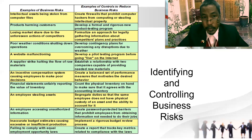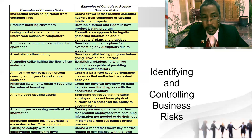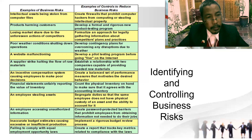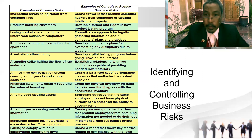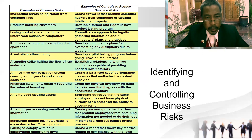Number three — unforeseen actions of competitors. We formalize an approach for legally gathering information about competitors' plans and practices. Number four — poor weather conditions shutting down operations. Develop contingency plans for overcoming any disruptions due to weather, such as typhoons or earthquakes. Number five — a website malfunctioning. Develop a pilot testing program before going live on the internet.